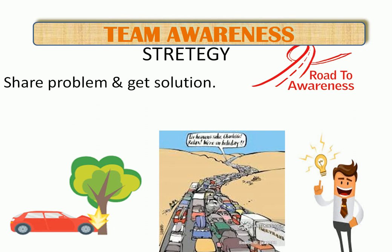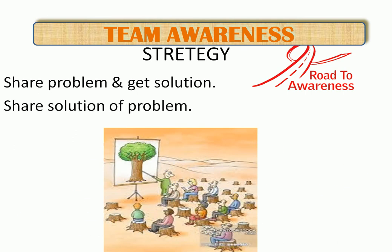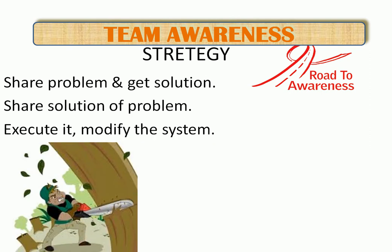Once we share this problem with the team, some members will come up with a solution. The second phase then starts — sharing the solution with the team. After the team is convinced, we take the third step: execute it, modify the system — cut the tree and check whether other trees are not growing on the road — to make the system smooth.